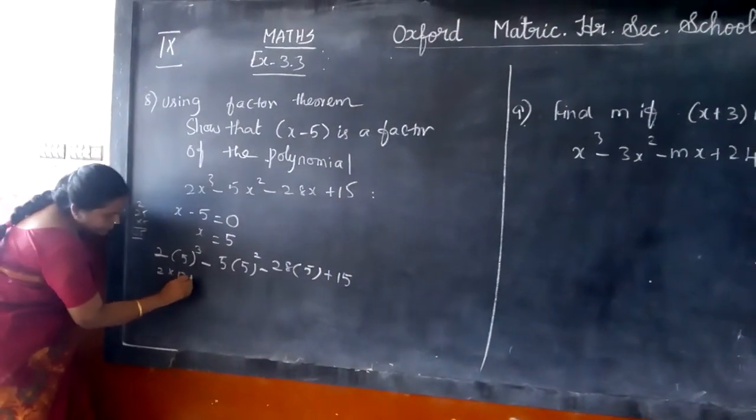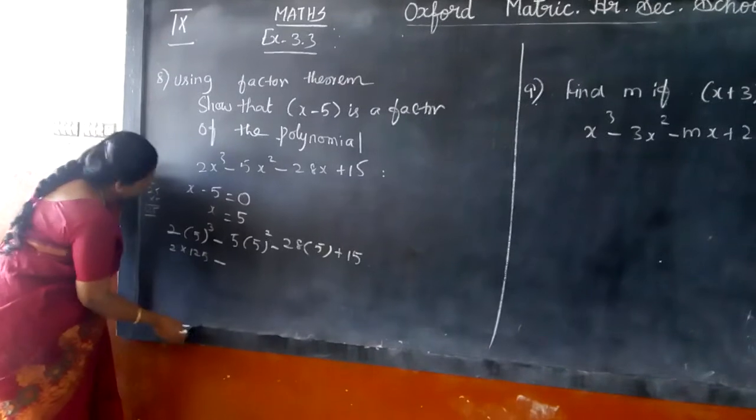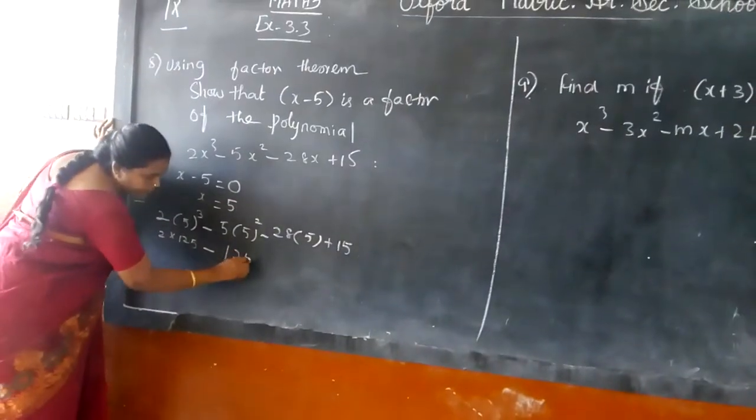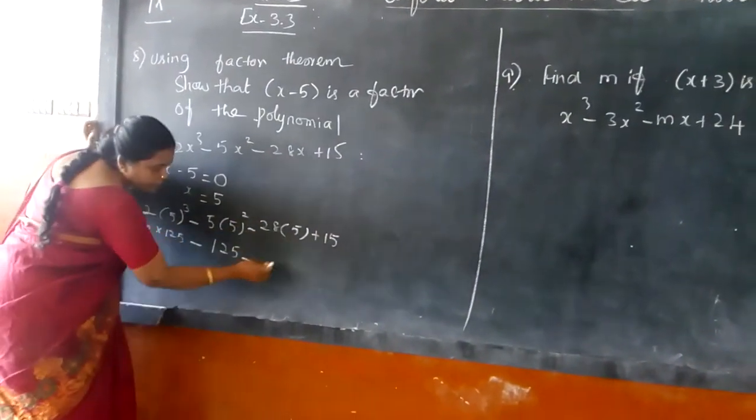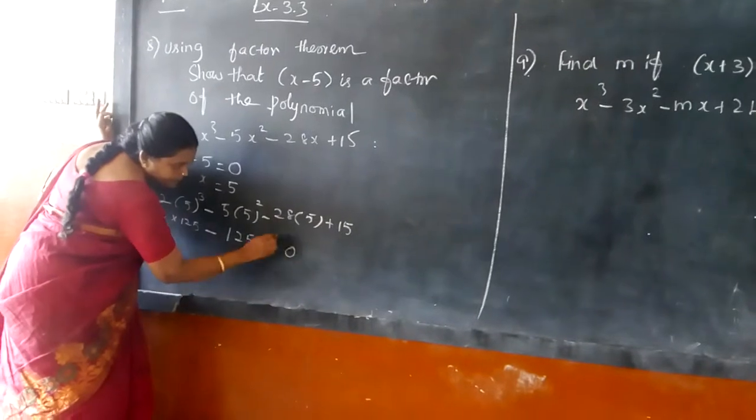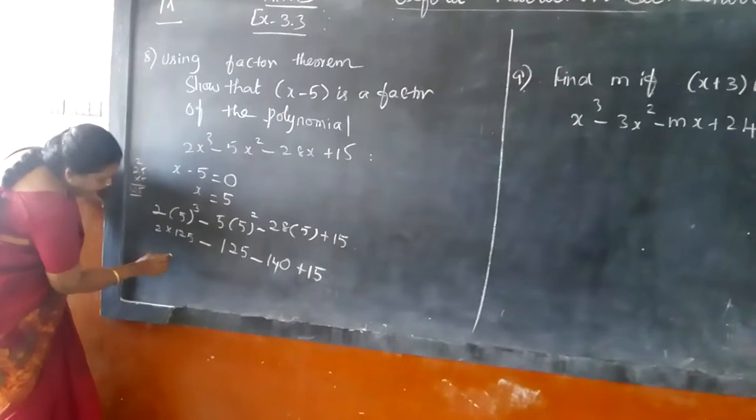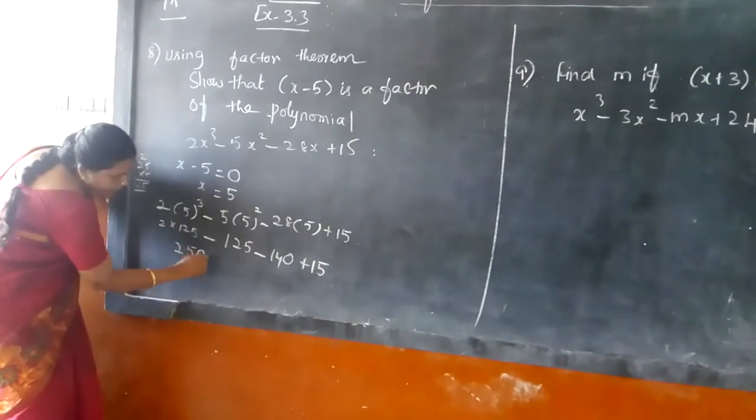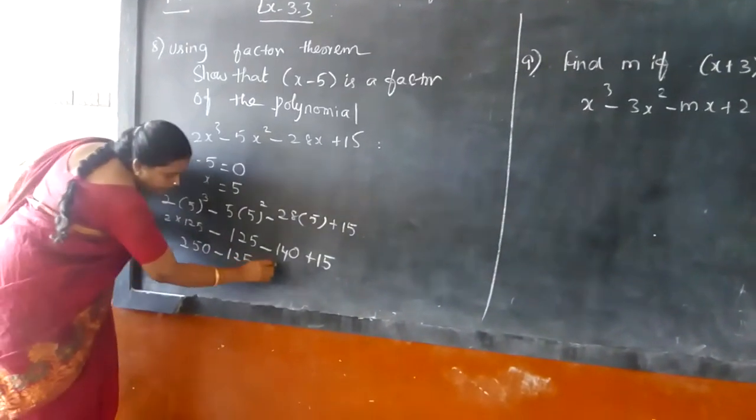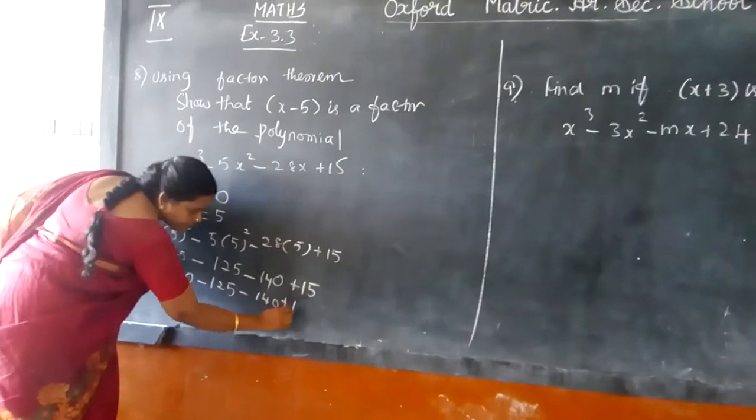So 2 into 125 minus 25 into 5, again it is 125 minus 28 into 5, 140 plus 15.